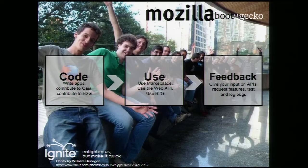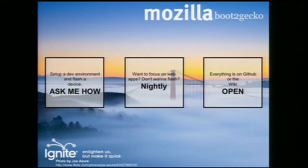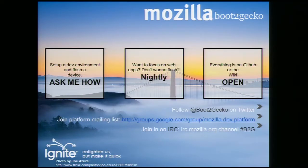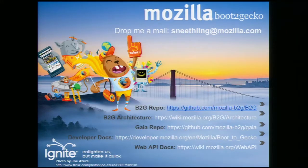You can get involved by either writing code, using the marketplace, using the APIs, using Boot to Gecko and giving us feedback on your experience and bugs you find. You can flash your device to run Boot to Gecko, or download the latest nightly of Firefox and write web apps and test out the web APIs. Everything we do is open source and on GitHub. You can follow everything happening with Boot to Gecko by joining the platform mailing list, or just join us in IRC — head to the B2G channel and ask us questions.